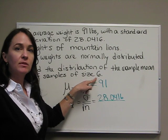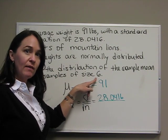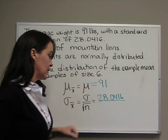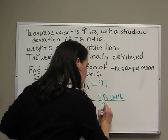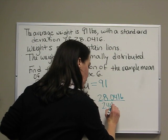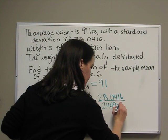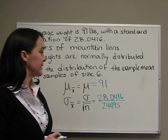We have to find the square root of n. Well, n is our sample size, 6. So we have to find the square root of 6. The square root of 6 is 2.4495, rounded to four decimal places.